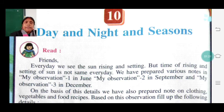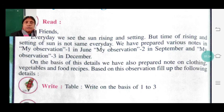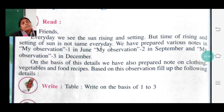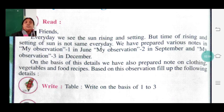We have prepared various notes: observation 1 in June, observation 2 in September, and observation 3 in December. Three observations we are doing and three notes we are preparing to observe the sunrise and sunset. On the basis of this detail, we have also compared notes on clothing, vegetables, and food recipes.